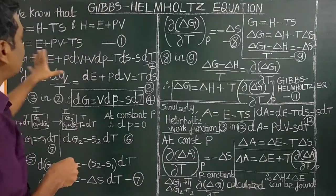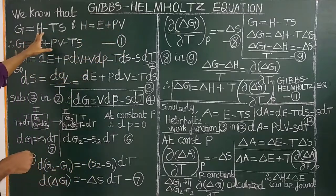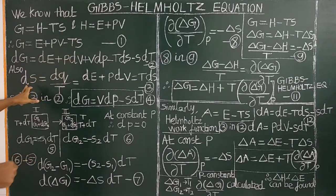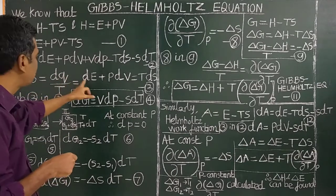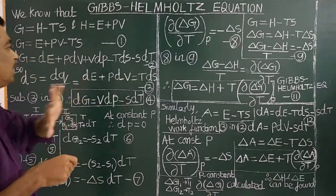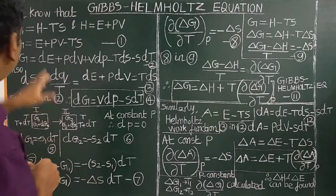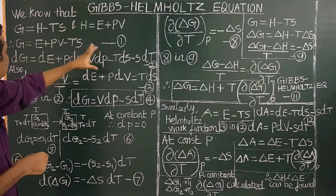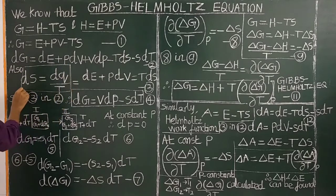Actually, it is derived from the first law of thermodynamics. The Gibbs free energy is G equal to H minus TS, where the entropy change is equal to DQ by T, that is delta S equals delta H by T. These are the three fundamental equations required to derive the Gibbs-Helmholtz equation.